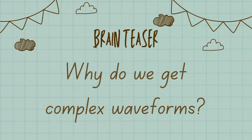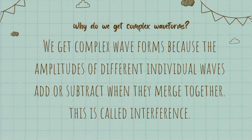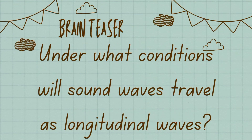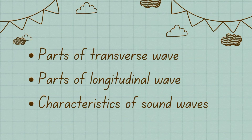Now it's time for the brain teaser. What do you think — why do we get complex waveforms in those pictures? This is because the amplitude of different individual waves add or subtract when they merge together. This is called interference, and you will study about this in higher classes. Next question: under what condition will sound waves travel as a longitudinal wave? This is for you to comment down below.